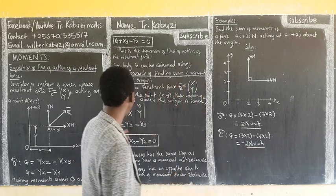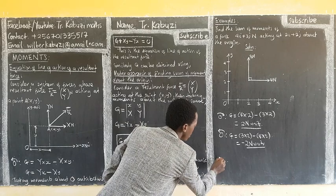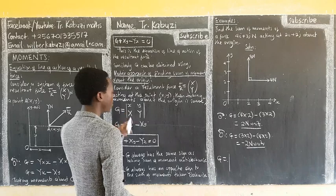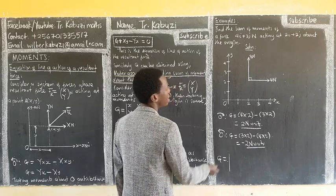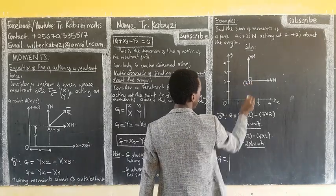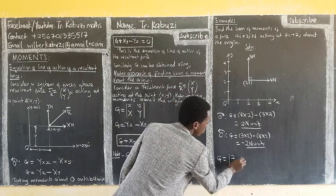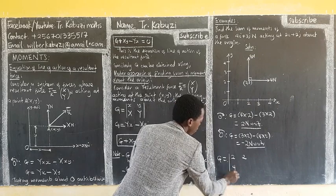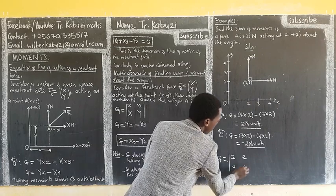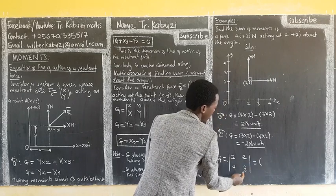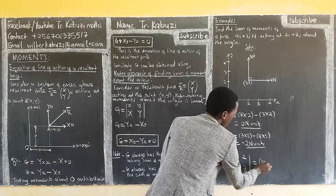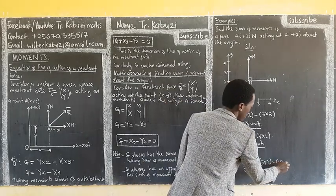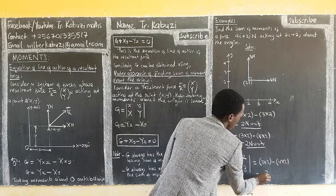Now let us use the determinant formula. Taking moments about the origin, with the point being (2, 2) and the force components (4, 3), we set up the matrix. The determinant gives 3 times 2, minus 4 times 2, which gives us negative 2.